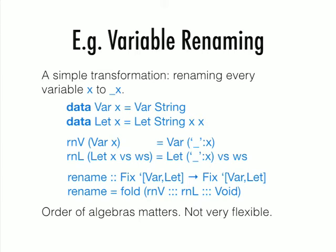A query is a function which takes a fixed point to something that's not defined using our fixed point operator. I'm going to start with transformations. This is one simple transformation doing something simple. The task is given an expression with variables, we want to go through the tree and change the name of every variable from X to underscore X. That's a simple transformation. Assuming we have these two functors, Var and Let, and you know how to do renaming for Var, you can turn that into an algebra.